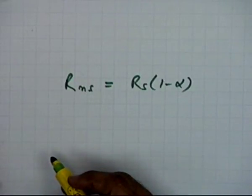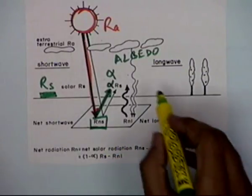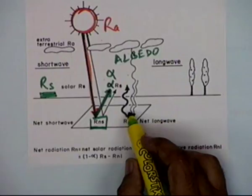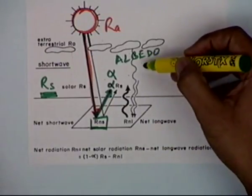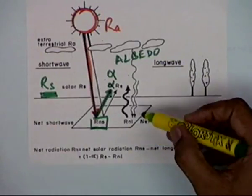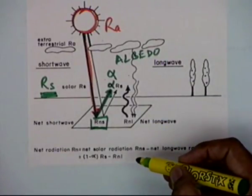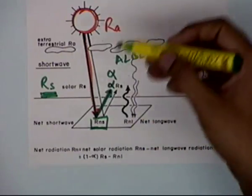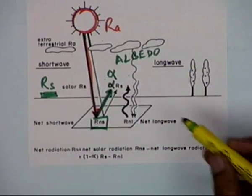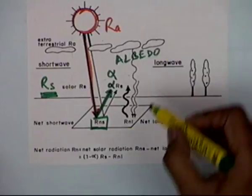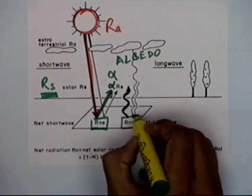Similarly, the other component — coming back to this sketch — there is another component which is the longwave radiation. This longwave radiation is a function of the status of the atmosphere and the earth's surface. There is some longwave radiation coming from the atmosphere into the soil and some component going from the soil into the atmosphere, depending on the gradient and the flux. This is accounted for as the net longwave radiation.